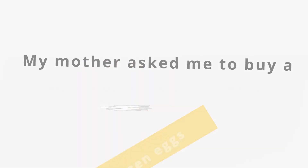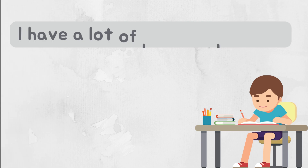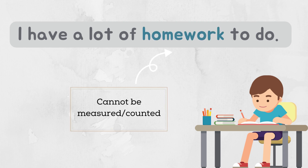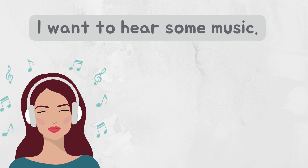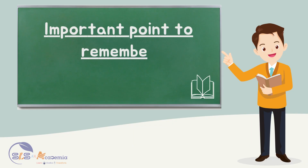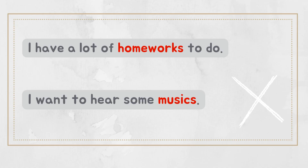Now let us learn about uncountable nouns. Uncountable nouns are those nouns that cannot be counted. For example, in 'I have a lot of homework to do,' I cannot measure the amount of homework. Similarly, in 'I want to hear some music,' I cannot measure the amount of music — so music is an example of an uncountable noun. Uncountable nouns do not have a plural form and cannot be used with a number; however, they are usually used with words like 'some' or 'a lot of.' So we cannot say 'a lot of homeworks' or 'some musics' — people usually make these kinds of mistakes in day-to-day conversations.